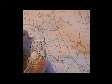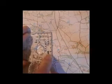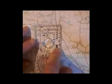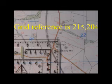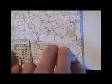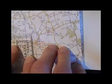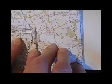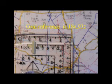We move the roma from the bottom left-hand corner to the base of the radio mast. We can see that the radio mast is at easting 215 and northing 204. We then take our 1:50,000 roma and place it again on the base of the building. We can see that our grid reference is 186932.